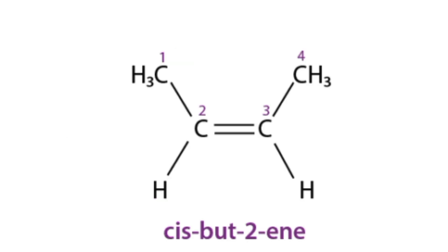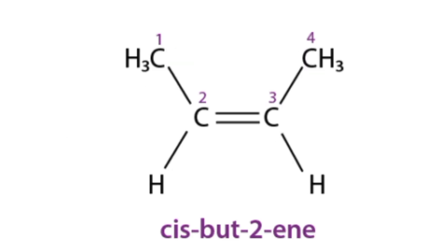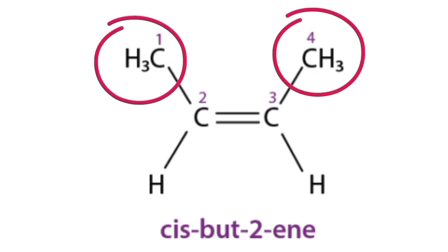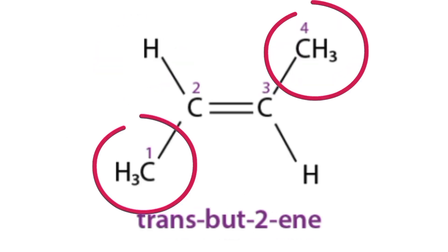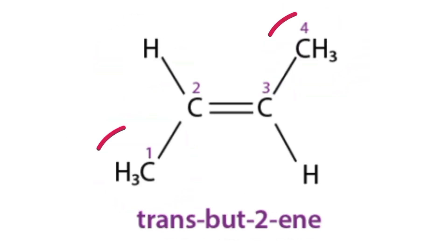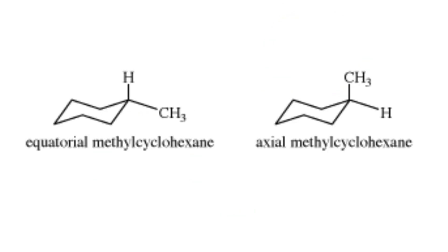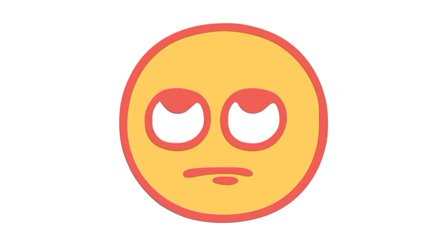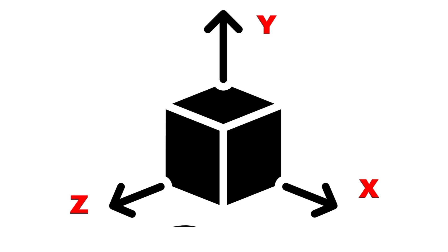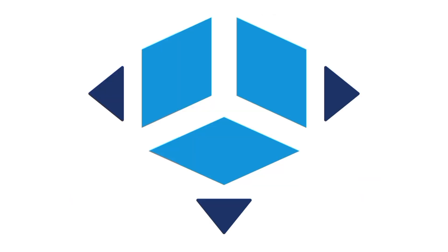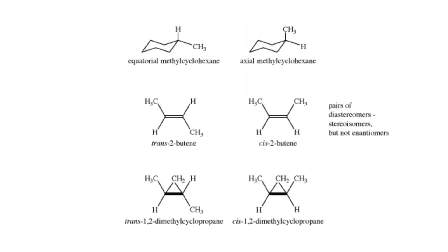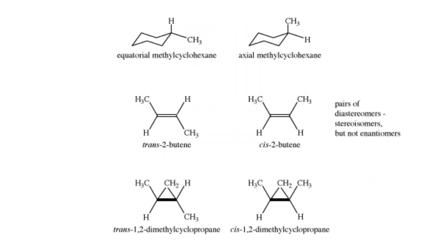In 2-butene, the cis-isomer has both methyl groups on the same side of the double bond, while the trans-isomer has them on opposite sides. Stereoisomers have the same molecular formula and connectivity of atoms but differ in the three-dimensional orientation of their atoms in space.